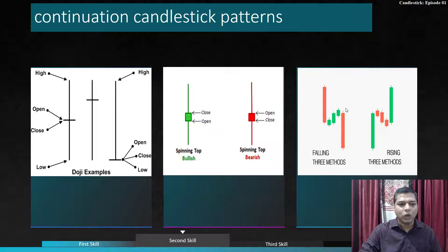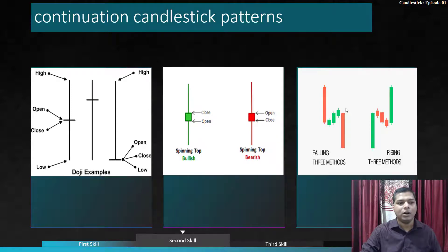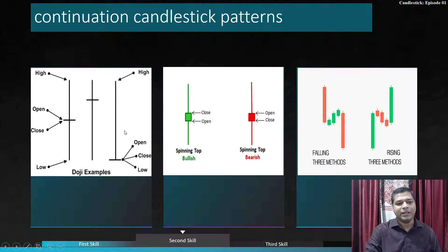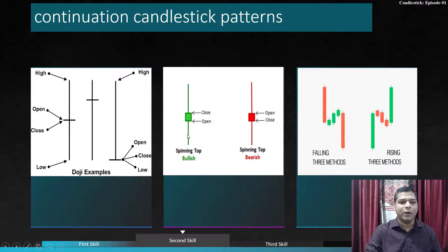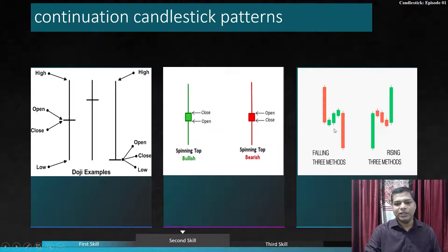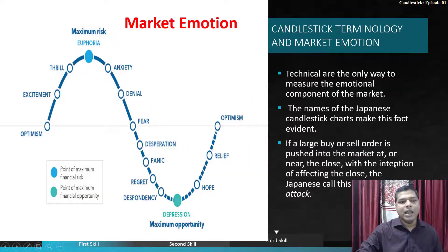Continuation patterns: the doji is the most preferred — the opening and closing prices are the same, with lower and upper wicks roughly equal. This is an indecision candle — we cannot decide if buyers or sellers are winning. The doji variants include the dragonfly and gravestone candles, discussed in detail in a second episode. The spinning top has a small body with equal upper and lower shadows, either bullish or bearish. The falling three and rising three methods are complete reversal patterns.